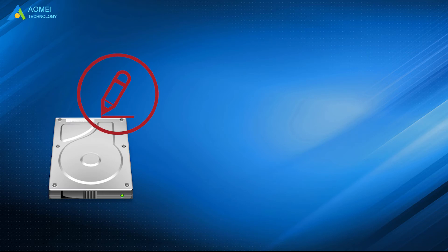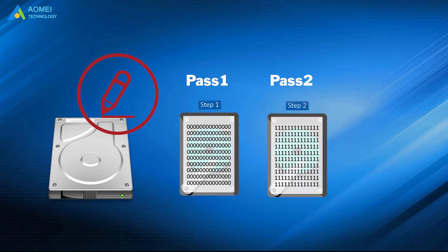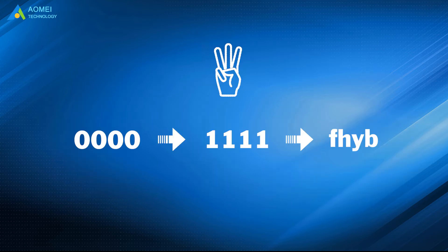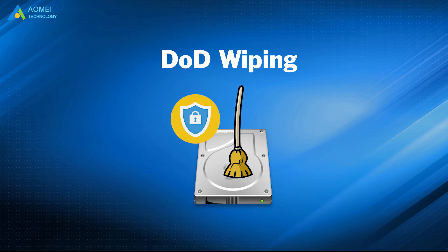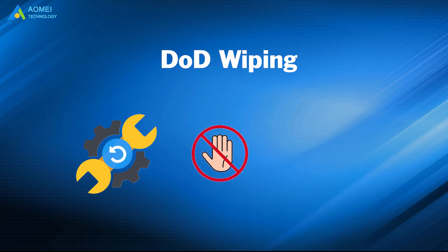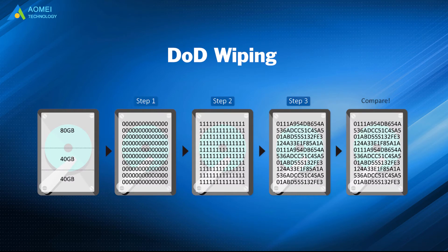It overrides our hard drive through three passes. Pass 1 is override hard drive with zeros. Pass 2 is override hard drive with ones. Pass 3 is override hard drive with random data. These three passes make the DoD wiping method much more secure than any previous method before.